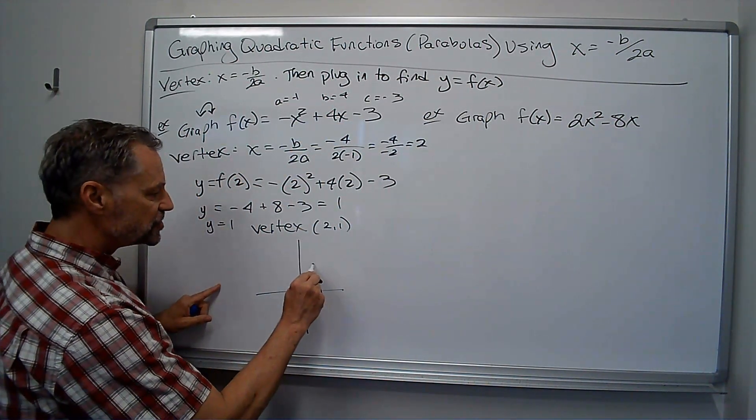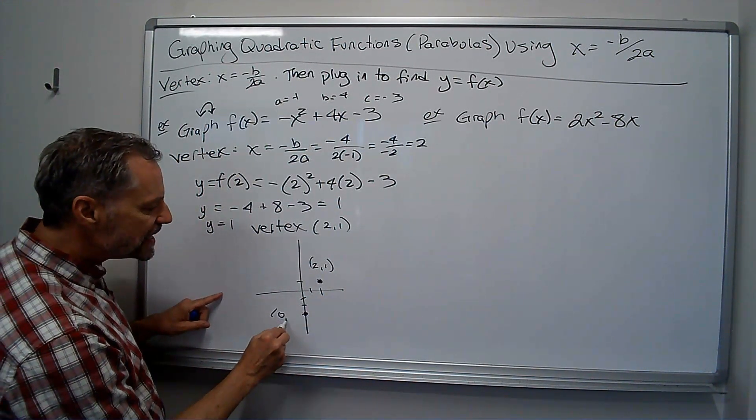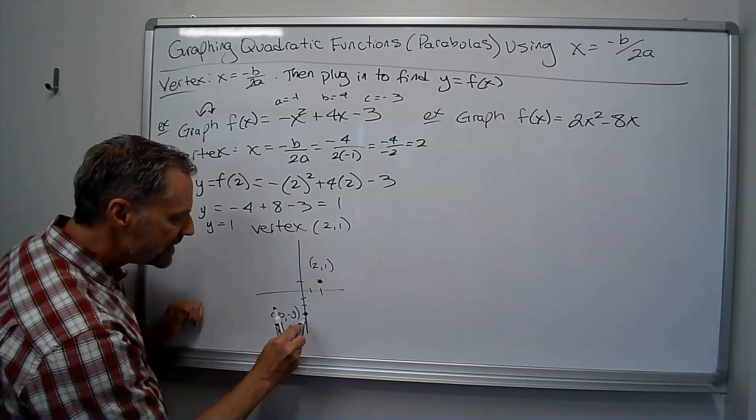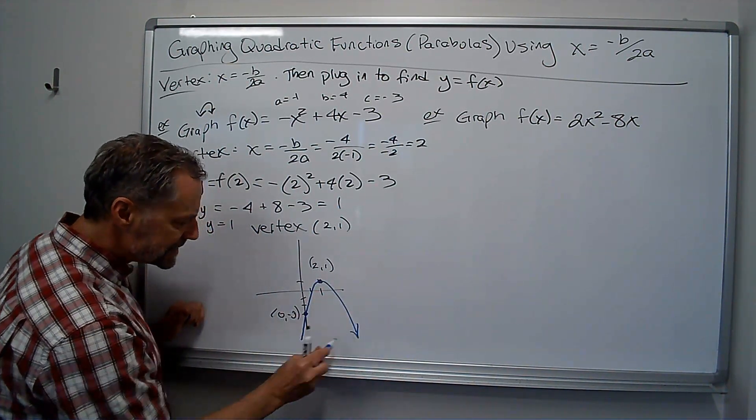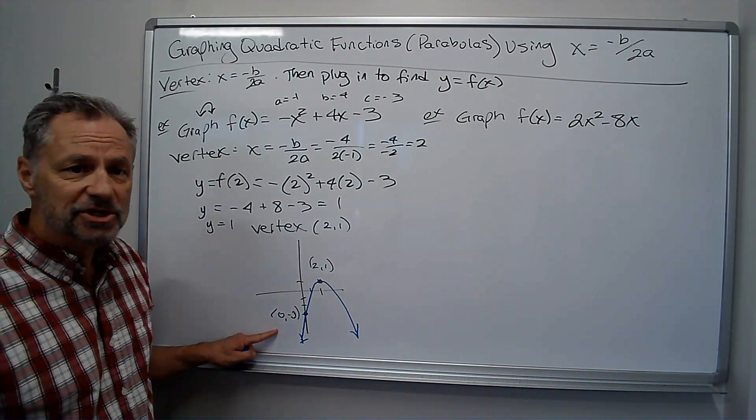So what did I have? I have 2, 1 as my vertex, 0, negative 3 as my x-intercept, and then there's my graph. And it matches the idea of it opening down going through that y-intercept.